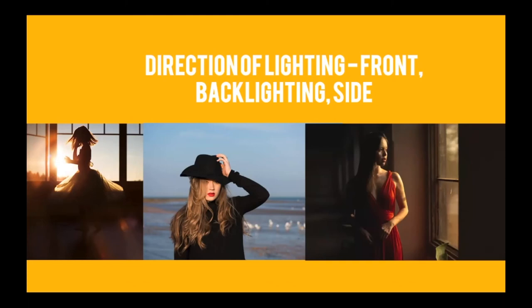The direction of light will create different effects on your photograph. On the left, the sun is behind the girl, creating a silhouette. In the middle, the sun faces directly on her face — everything is well lit and you can see all the details. On the right, the sun comes from the side, showing one side bright and the other dark, creating a dramatic effect. Where your light source is will give you a different lighting situation.